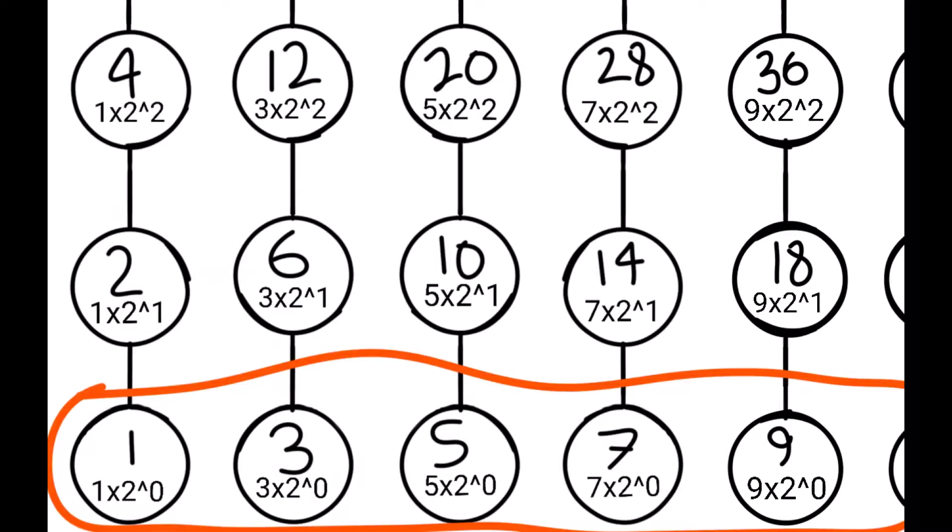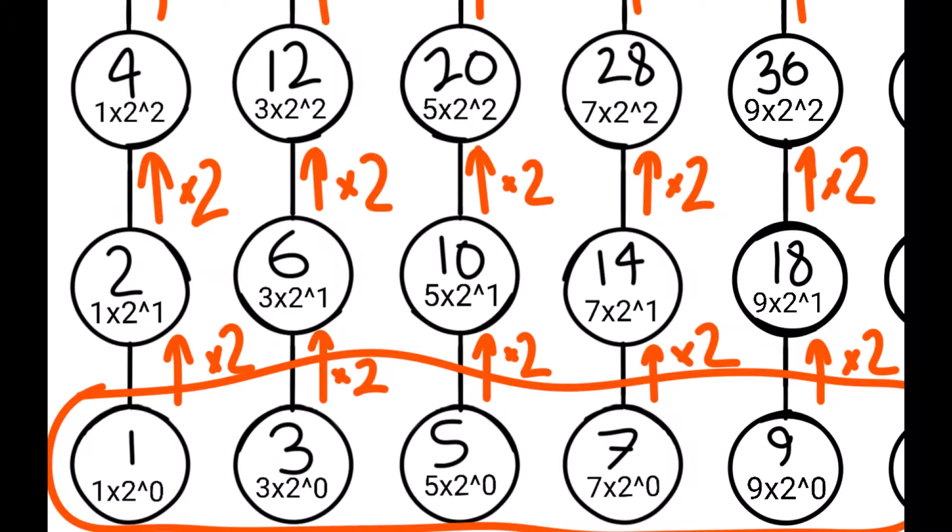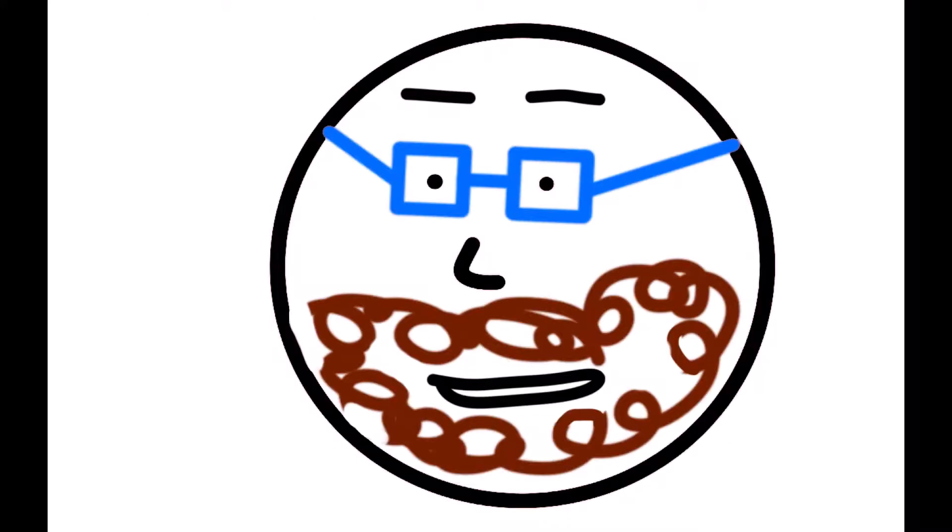On the base of each branch, we have the odd numbers arranged in order. Then above those, we have the odd numbers multiplied by 2. This makes them even numbers but not multiples of 4.